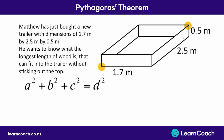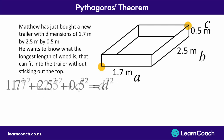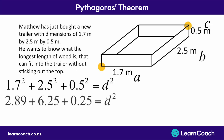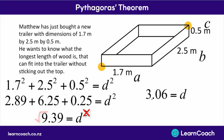Labelling our sides a, b, and c, we can find our length d. Substituting in: a is 1.7, b is 2.5, and c is 0.5. We plug this into our calculator to find d squared. Now d squared is 9.39 metres. So in order to find d, we need to square root: square rooting 9.39 gives us a final answer of 3.06.